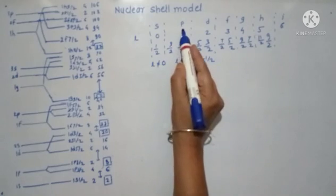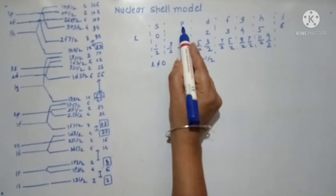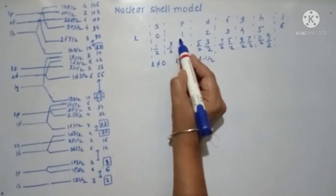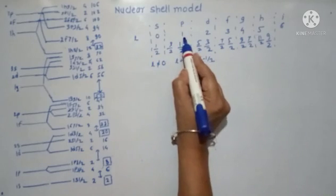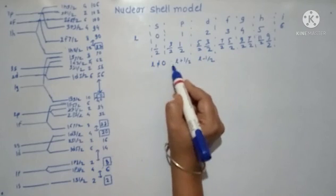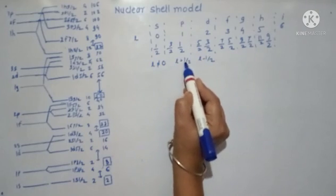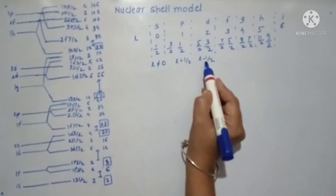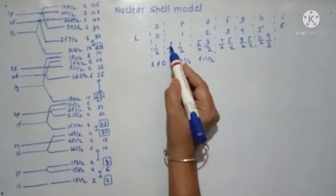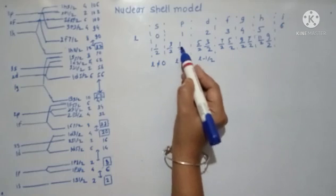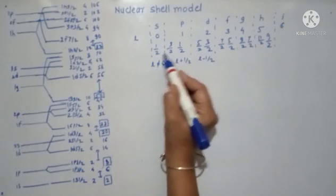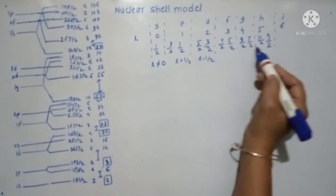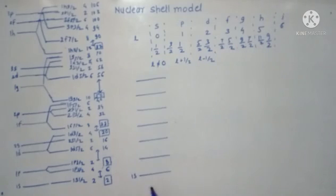For example, for P, we have L equal to 1. Therefore, it is splitting into L plus 1 half and L minus 1 half, which is 3/2 and 1/2. Similarly, I have shown the splitting of all the orbits.